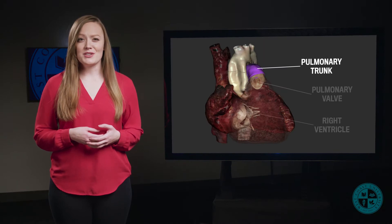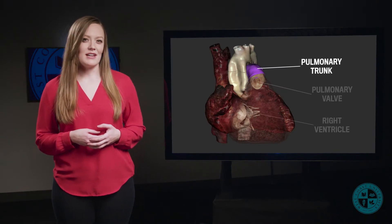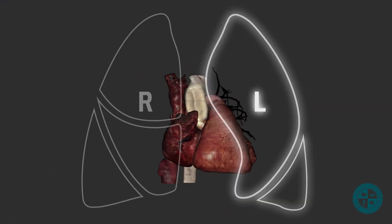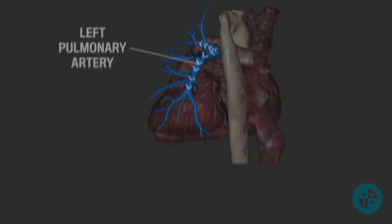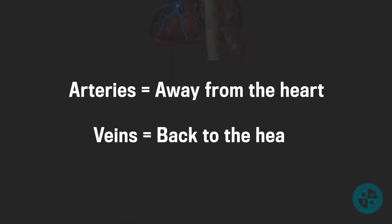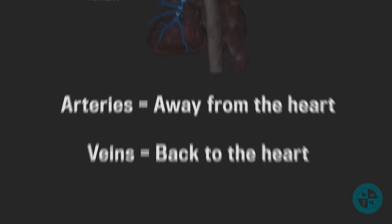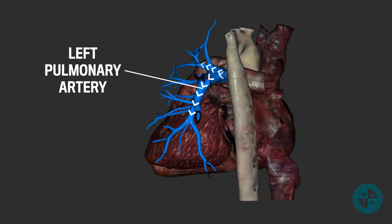From here, we have a decision to make — do we want to go to the right lung or the left lung? Let's go to the left. So we travel through the left pulmonary artery. It's important to note that arteries move blood away from the heart, while veins bring blood back to the heart, which explains why even though the pulmonary artery is an artery, it's carrying deoxygenated blood.